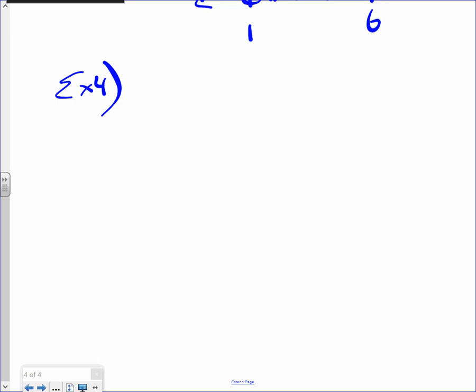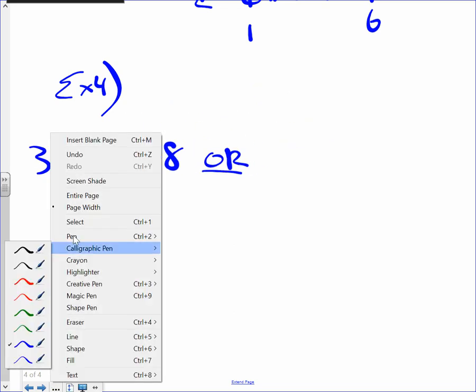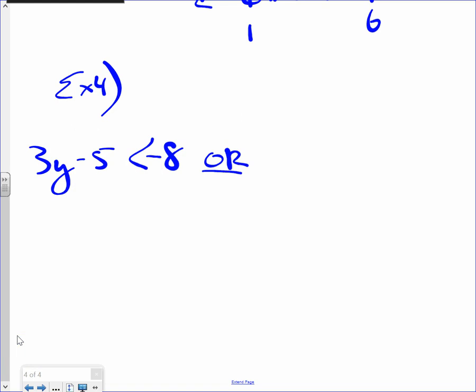Three y minus five. Watch this now. Three y minus five is less than negative eight. Or, look at the word or. Or. Two y minus one is greater than five.